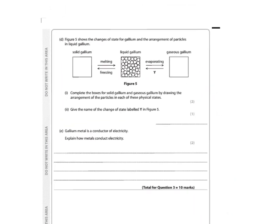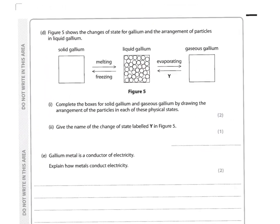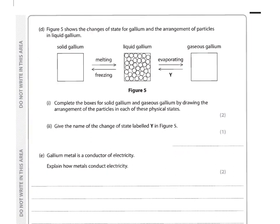Figure 5 shows the changes in state of gallium and the arrangement of particles in liquid gallium. Complete the boxes for solid gallium and gaseous gallium by drawing the arrangement of particles. In a solid, particles are arranged in nice neat rows touching each other. In a gas, you just need a few particles that are well spaced out and not touching. That's an easy two marks.